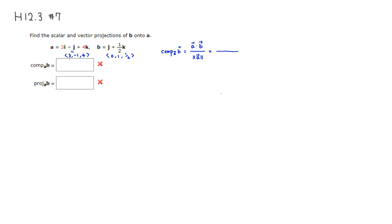Computing that: 3 times 0 is 0, negative 1 times 1 is negative 1, and 4 times 1/2 is 2. The magnitude of A is the square root of 3² + (-1)² + 4² = √(9 + 1 + 16) = √26. So the scalar projection is 1 over √26.